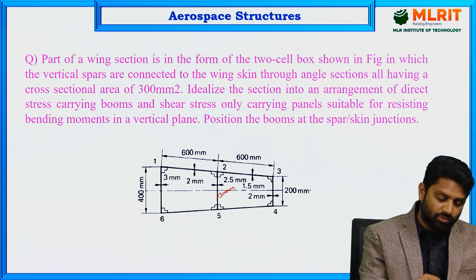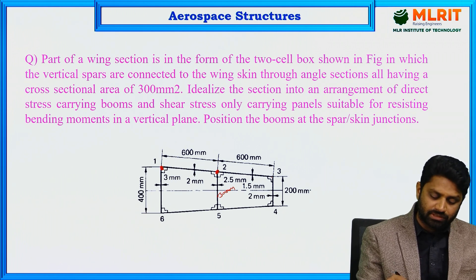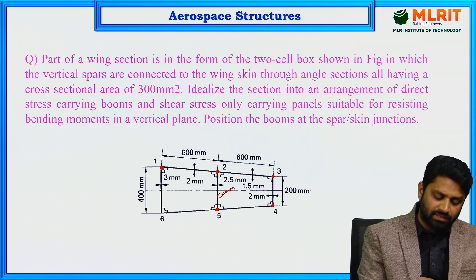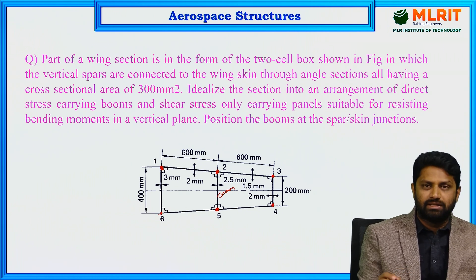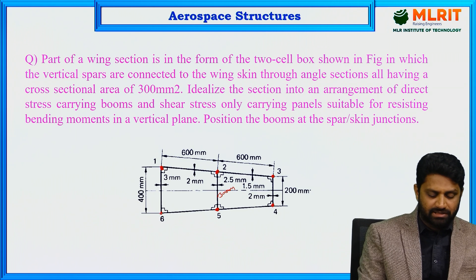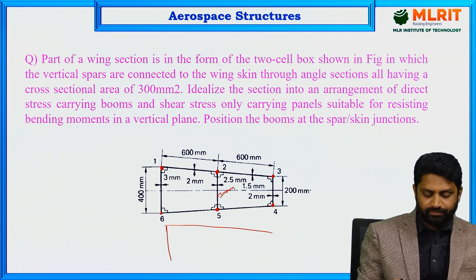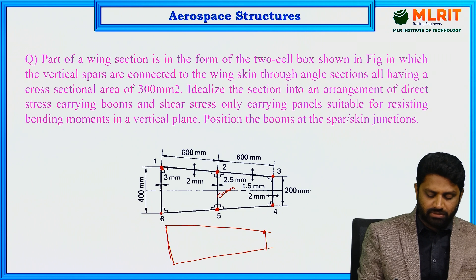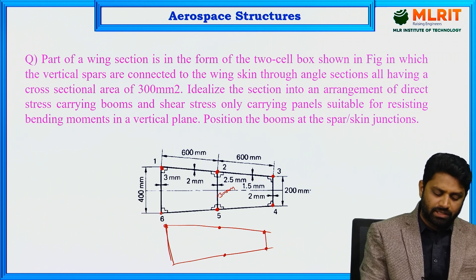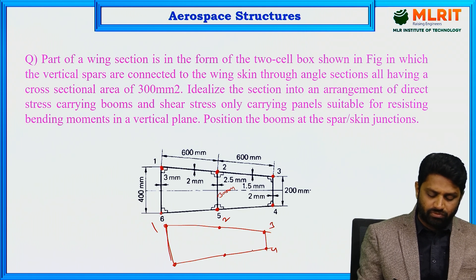We remove the angle sections and replace them with booms so that the idealized section looks like this. We have booms at positions 1, 2, 3, 4, 5, and 6 — a total of 6 booms that ideally replace the angle sections.